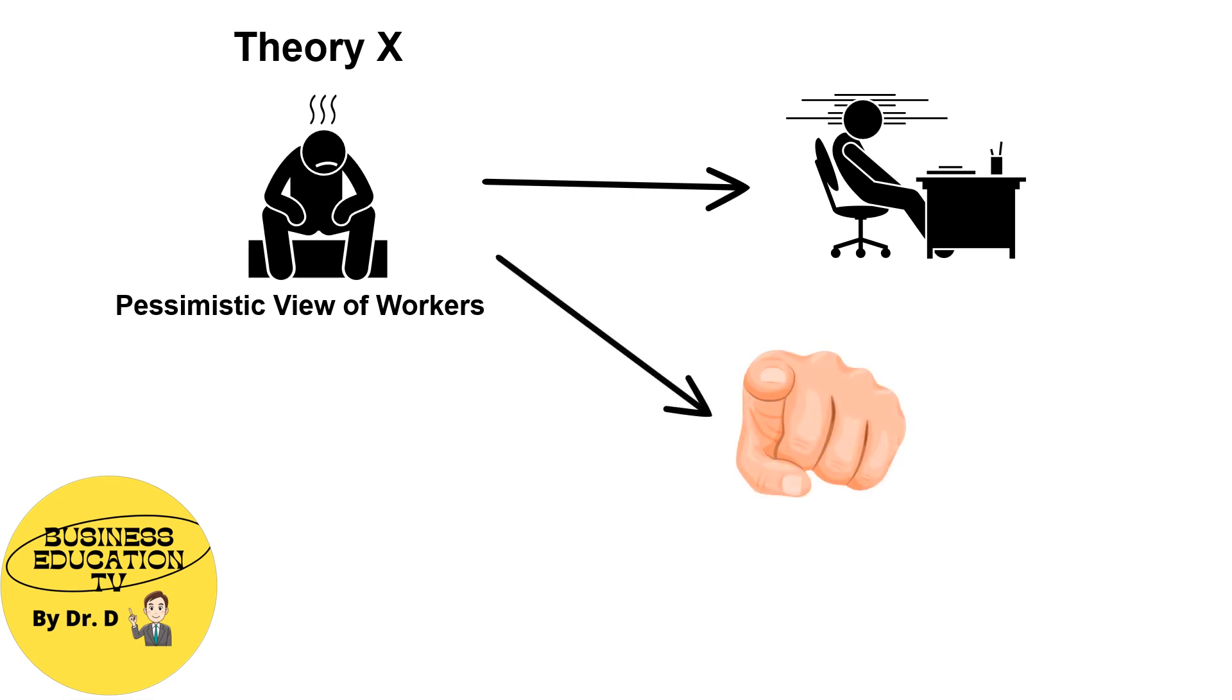There's a need for supervision where most people must be coerced, controlled, directed, and threatened with punishment to get them working. Employees in this theory also avoid responsibility.